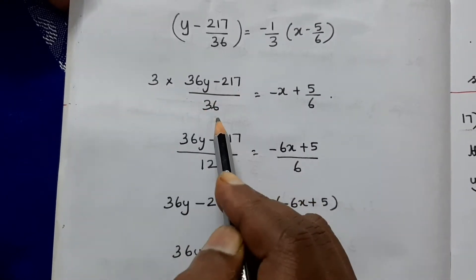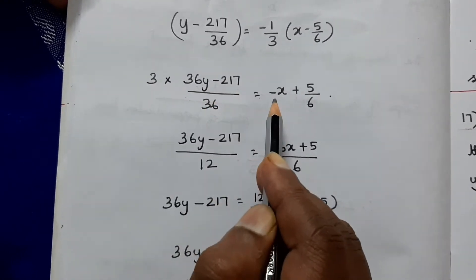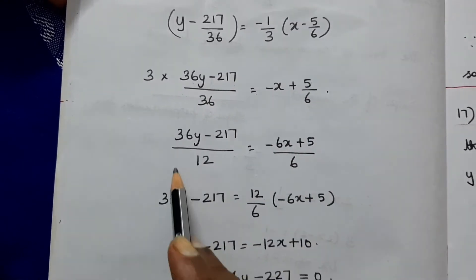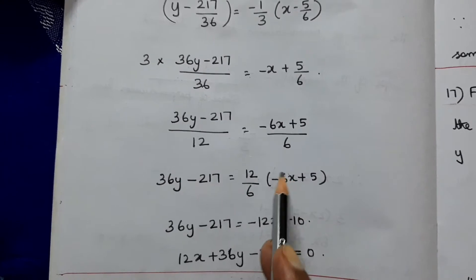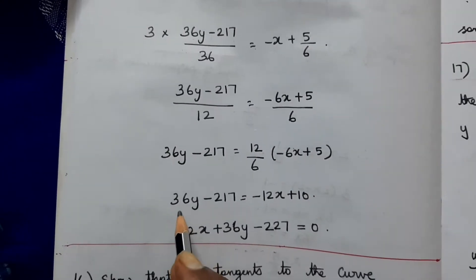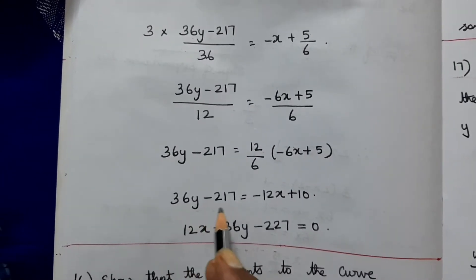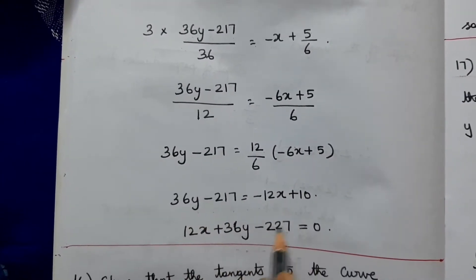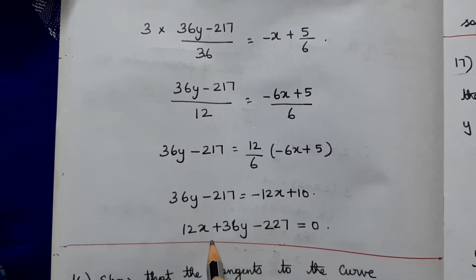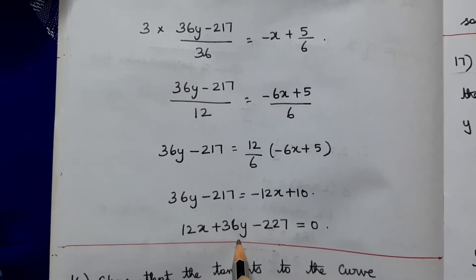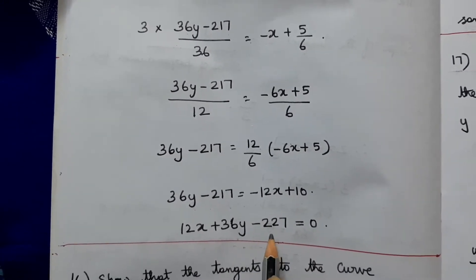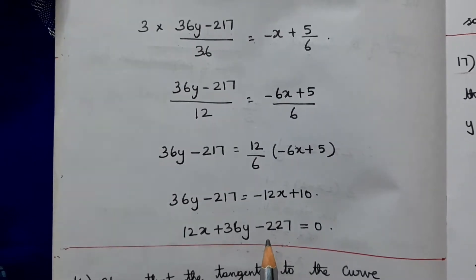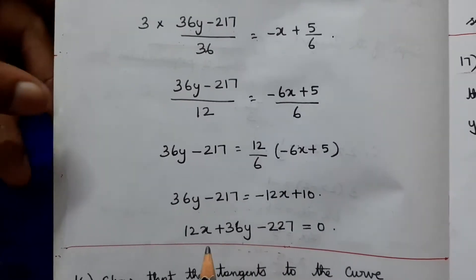Using the point-slope formula with x₁ = 5/6, y₁ = 217/36, and slope = -1/3: y - 217/36 = -1/3(x - 5/6). Simplifying, 36y - 217 = -12x + 10, giving the equation 12x + 36y - 227 = 0 as the equation of the tangent perpendicular to the line.